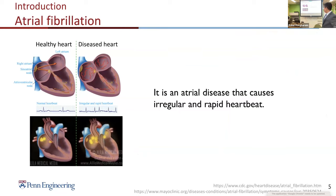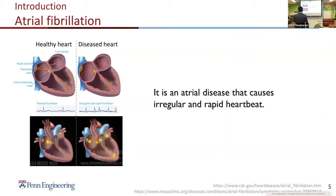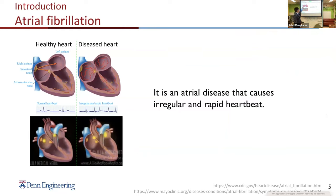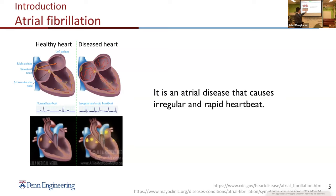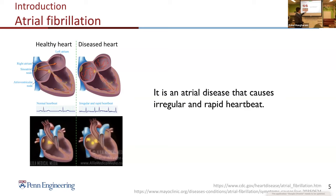Atrial fibrillation is a disease that causes irregular and rapid heartbeats. In a healthy heart, the activation has a specific sequence where the atrium contracts first and then the ventricle. But with a diseased heart — for example, one with atrial fibrillation — the activation waves are very irregular. It causes the heart to contract irregularly and lose its efficiency of pumping blood.